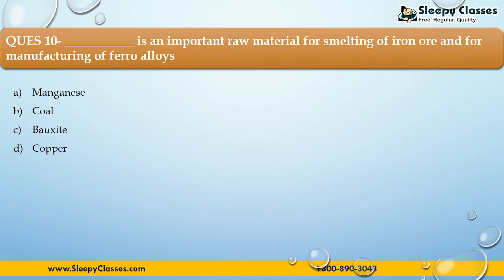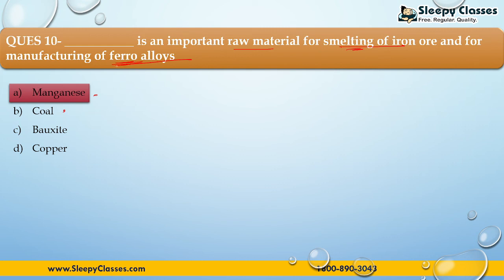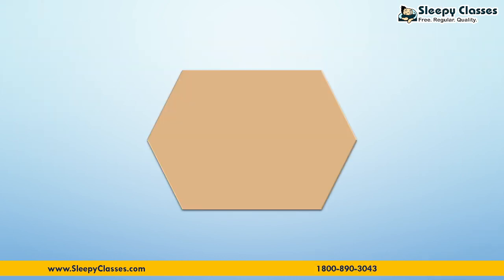The final question: Which is an important raw material for smelting of iron ore and for manufacturing of ferro alloys? First, manganese; Second, coal; Third, bauxite; Fourth, copper. The correct answer is option A — manganese. Both coal and manganese are relevant for smelting iron, but for ferro alloys you need a metallic element — coal is not metallic. So the answer is manganese. Comment below to tell us how many marks you got. Thank you so much, see you next week!